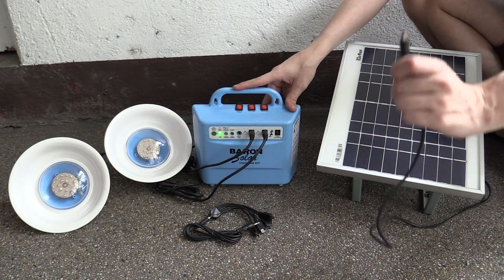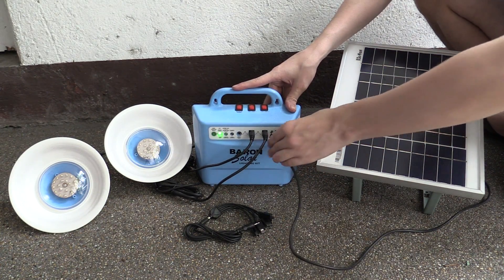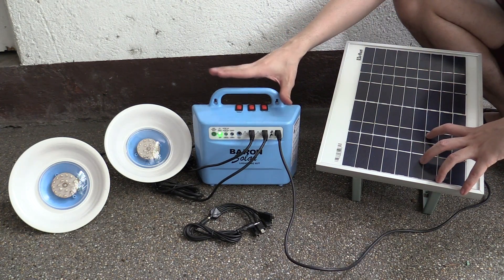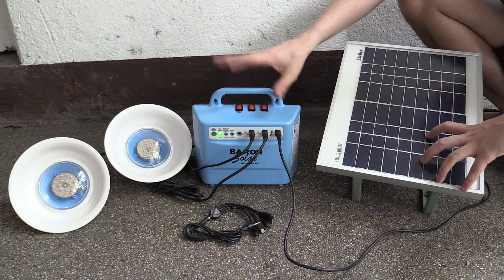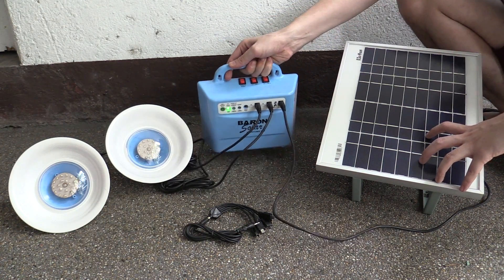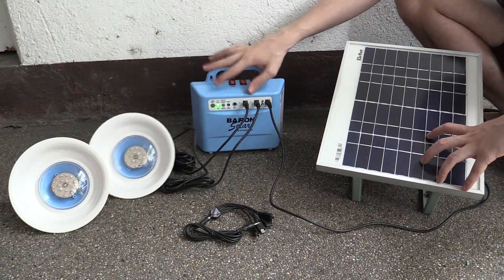So the first thing you're going to do is take the solar panel and connect it to the charge controller or the battery box. Then we put the solar panel out in the sun. This box stays inside your home or at least under shade. You do not want to put this out in the sun because the heat will destroy the battery. So make sure you keep this box either inside your home or at least under shade.